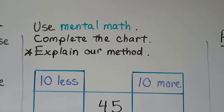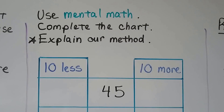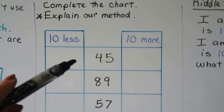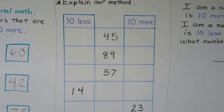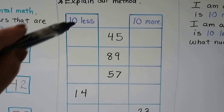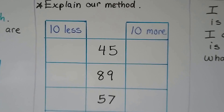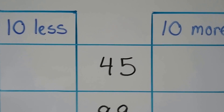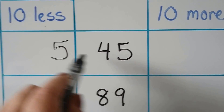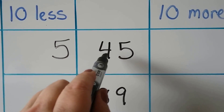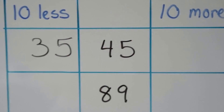Use mental math to complete the chart and explain our method. So 10 less than 45: the ones are going to stay the same, we're going to have 1 less 10 — 1 less than 4 is 3, so 10 less is 35.